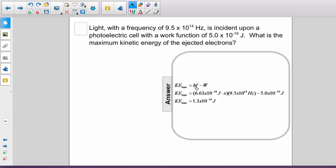Substituting for H for the frequency, 9.5 times 10 to the 14 hertz, and subtracting the work function, 5 times 10 to the negative 19 joules, we get a maximum kinetic energy of 1.3 times 10 to the negative 19 joules.